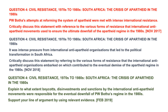The second question was extracted from the November 2018 paper and reads as follows: It was intense pressure from international anti-apartheid organizations that led to the political transformation in South Africa. Critically discuss this statement by referring to the various forms of resistance that the international anti-apartheid organizations embarked on, which contributed to the eventual demise of the apartheid regime in the 1980s.